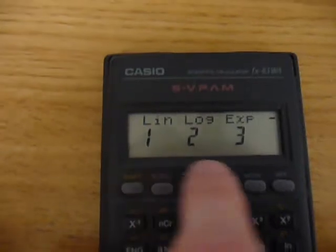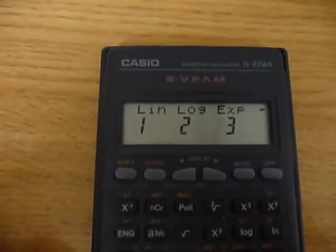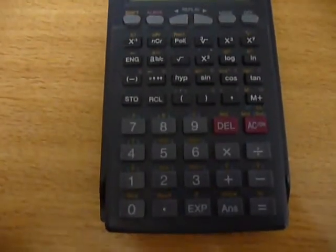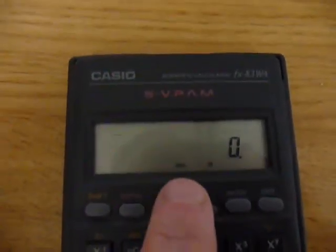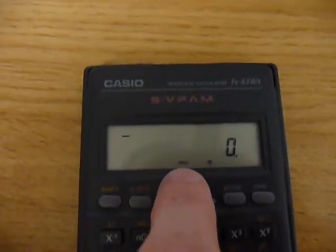And you see when you press that you get a series of options depending on what type of regression that you want to do. And we want to do a simple linear regression, so we're just going to select the number 1. So you select the 1 key. And you'll see now that the REG for regression symbol appears on the calculator.